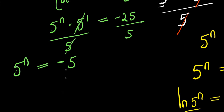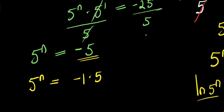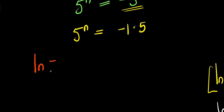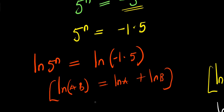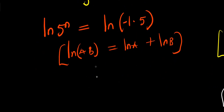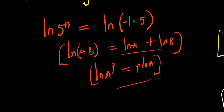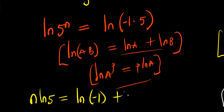Now consider a different identity. Express negative 5 as negative 1 times 5, so 5 power n equals negative 1 times 5. Applying natural log to both sides: natural log of 5 power n equals natural log of negative 1 times 5. Using the properties — natural log of a times b equals natural log of a plus natural log of b, and natural log of a^p equals p times natural log of a — we get n times natural log of 5 equals natural log of negative 1 plus natural log of 5.